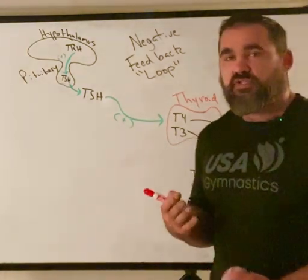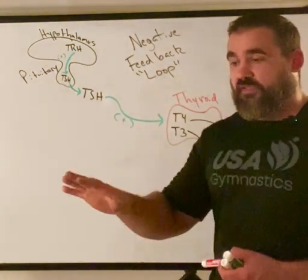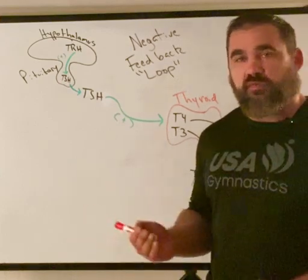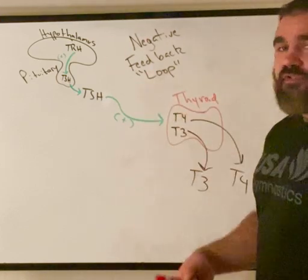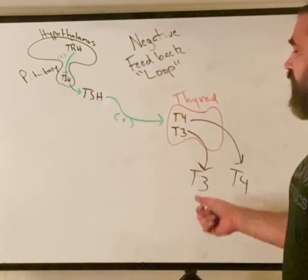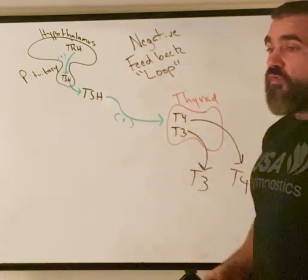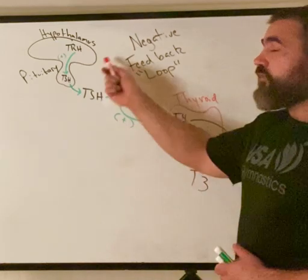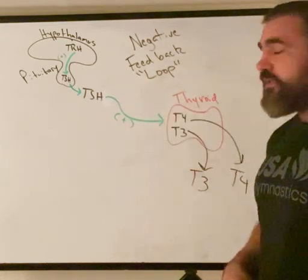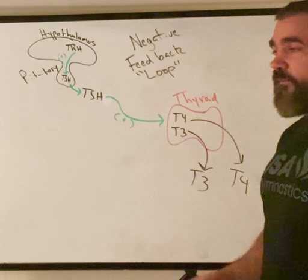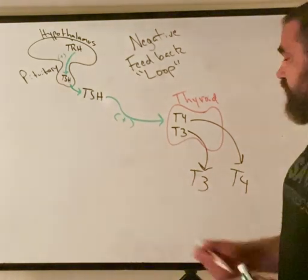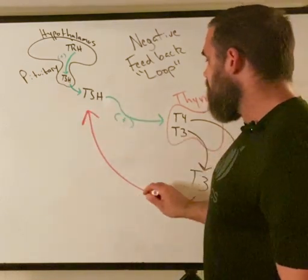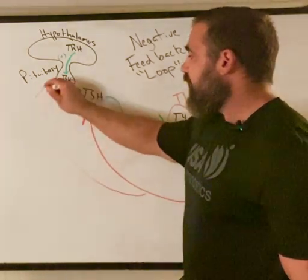Negative feedback is like a system of checks and balances. We stimulate something to increase, but we don't want it to increase too much. TRH and TSH lead to production of thyroid hormones, but how do they know how much to pump out? They measure the levels of T4 and T3. T4 and T3 are going to negatively feedback on the hypothalamus and the pituitary.